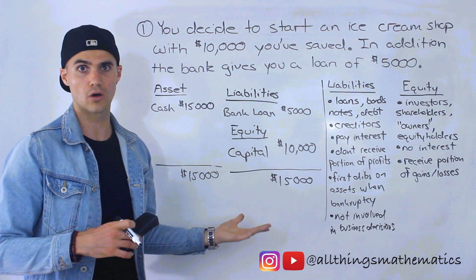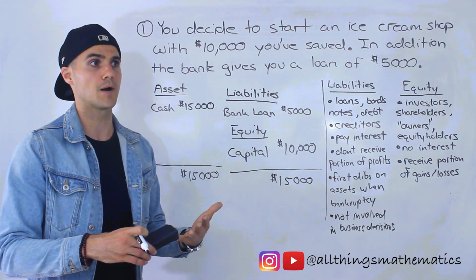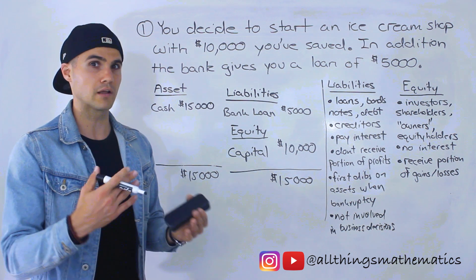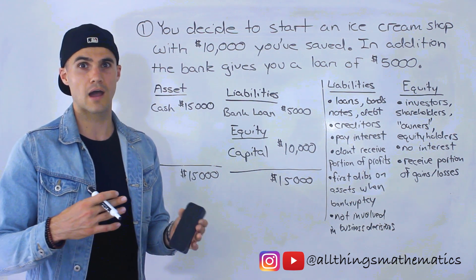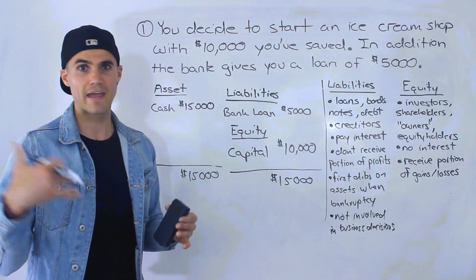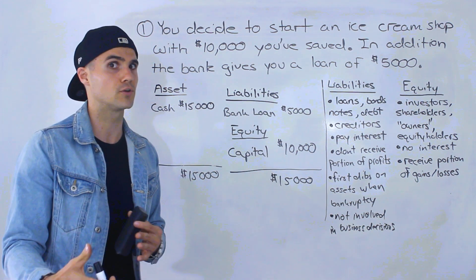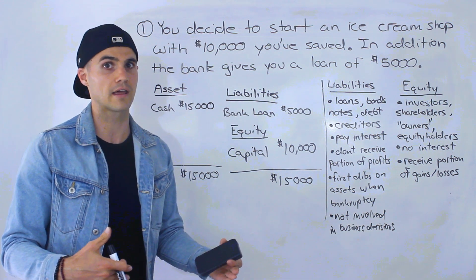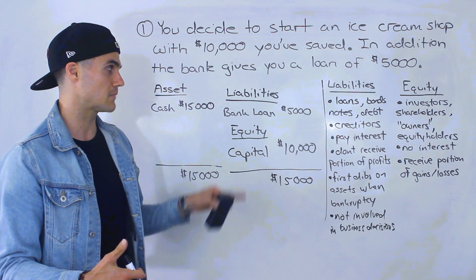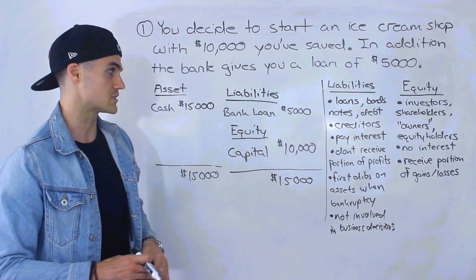It's kind of like if you get a school loan. Before you get the school loan, the bank may look at your ability to pay it back, what your parents are making, etc. But once you get the school loan, the bank isn't going to be calling you every day asking how you're doing in school or what job you're planning to get after school. As long as you're making those interest payments on that loan, everything is all good.